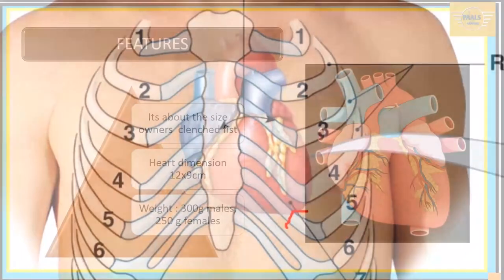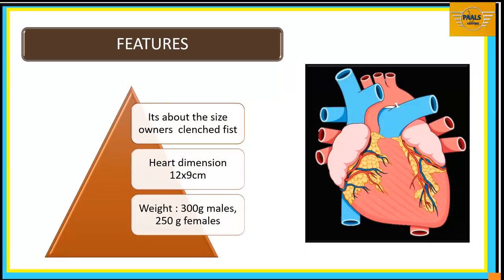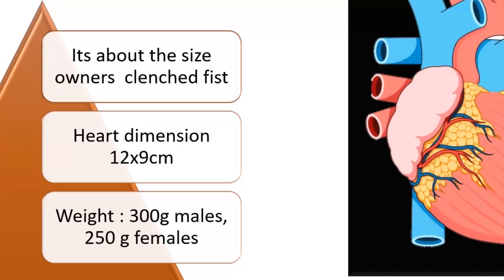Generally, the heart is about the size of the owner's clenched fist. If you clench your fist, you have a good idea of the size of your heart. The dimension is 12 by 9 cm. For males, the average weight is about 300 grams, and for females, about 250 grams.